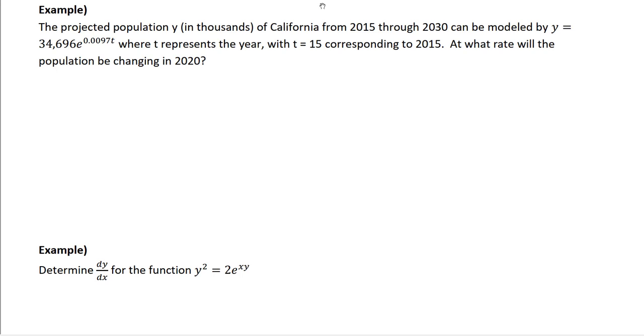The projected population of California from 2015 to 2030 can be modeled as that exponential function, where t represents the year, where t equals 15 corresponds to 2015. At what rate will the population be changing in 2020? In order to find out rate, I need to find the derivative. The rate is the derivative, that's the slope. So 34696 e to the 0.0097t times 0.0097.